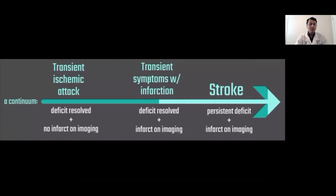TIA and stroke are actually a continuum of the same process. If the patient has transient deficits and no infarction on CT scan or MRI, it will be called a TIA. If the patient has transient neurological deficit but has an infarction on CT scan or MRI, it will be called an ischemic stroke. This happens quite frequently, particularly when the duration of the event is longer — even with transient symptoms, patients tend to have a stroke on CT scan or MRI. And as we traditionally know, if symptoms are persistent and there is an infarction on imaging, it will be called a stroke.